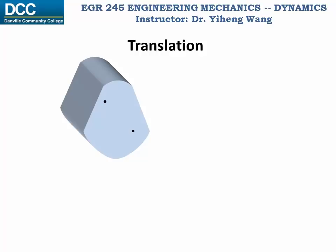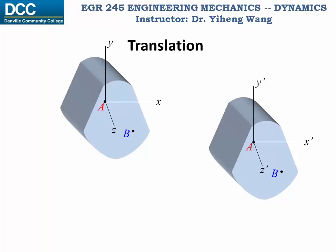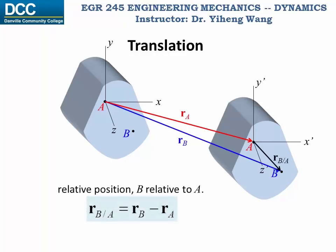Now let's analyze translation using relative motion. Let's say there are two arbitrary points on this rigid body, point A and point B. Initially there is a fixed x, y, z coordinate system with the origin at point A. Then we define another x prime, y prime, z prime rectangular coordinate system that will always have the origin at point A and will translate with point A. At any given time during motion, vector R_A represents the absolute position of point A measured from a fixed origin, R_B represents the absolute position of point B, and R_BA represents the relative position of point B relative to point A, which equals R_B minus R_A.